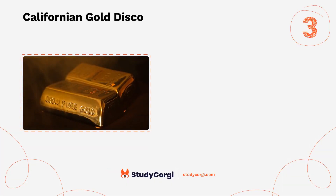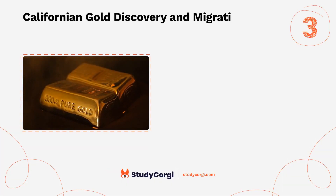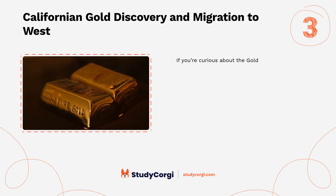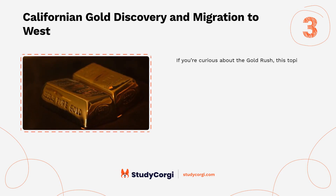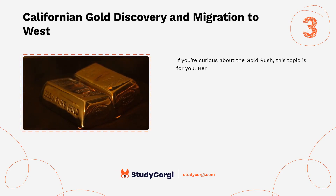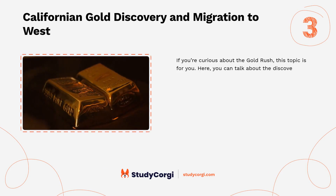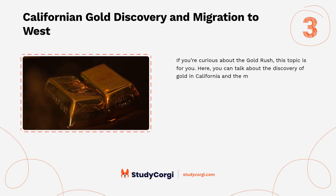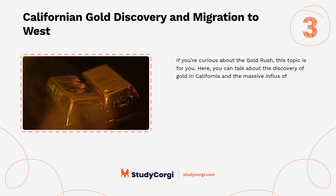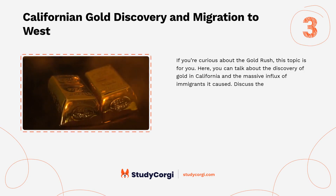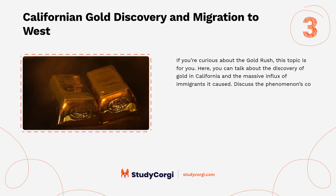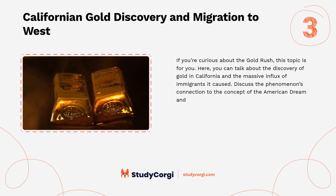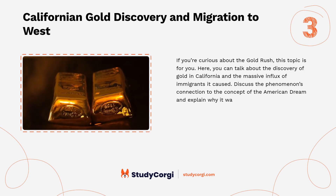Topic 3: Californian gold discovery and migration to the West. If you're curious about the Gold Rush, this topic is for you. Talk about the discovery of gold in California and the massive influx of immigrants it caused. Discuss the phenomenon's connection to the concept of the American Dream and explain why it was called a rush.